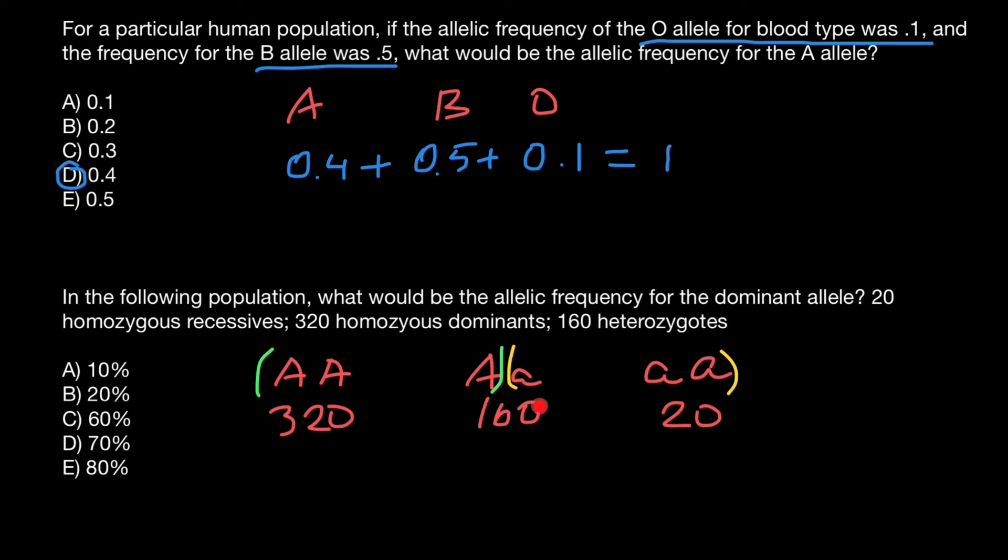Take a look. Heterozygous, which are 160, have one dominant allele and one recessive allele. So we can add half of this number here. So one half of 160 is going to be 80.